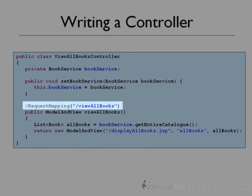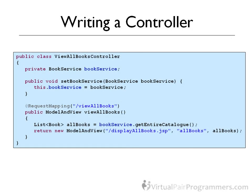There is an annotation on the ViewAllBooks method — this is the RequestMapping annotation. It tells Spring that this is a method that we want to connect to a URL on the browser. So in our case, when the user types viewallbooks.do, this is the method that we want Spring to run. That annotation is going to become really important when we have more than one use case inside a single controller. For now, we just need the annotation there.